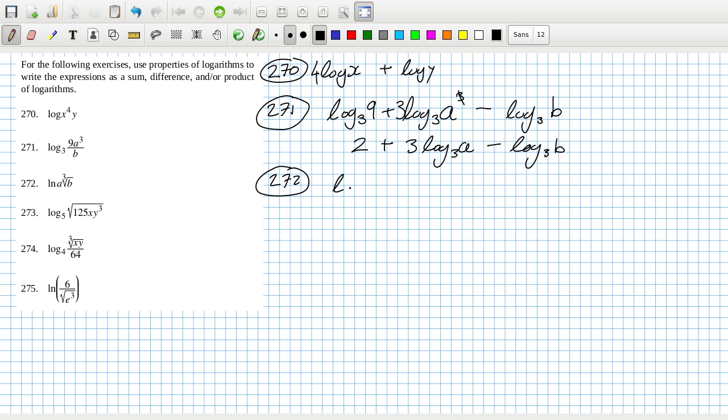Now 272, that would be log natural log a plus natural log b power third, but of course that third can be brought down in front.